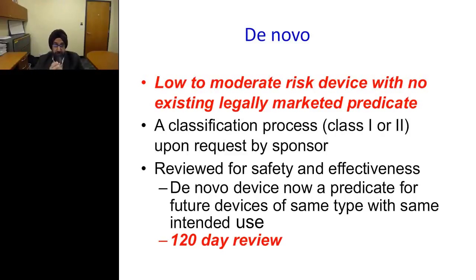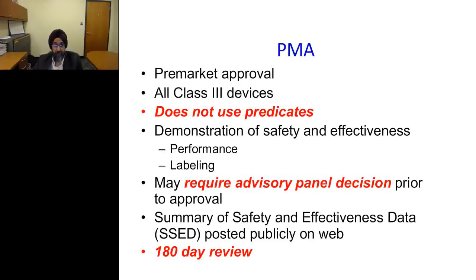FDA was very clear that for a low to moderate risk device where there is no predicate, you can still go to FDA through the De Novo pathway and they will help you decide if the device is ready for clinical use and is safe. The De Novo process can take up to 120 days, a bit longer than the 510(k). Class III devices require even more time, involving multiple levels of meetings with advisory panels at different layers of FDA communication.